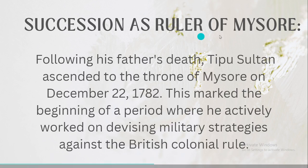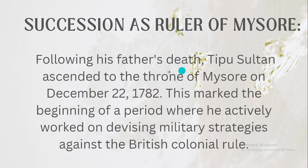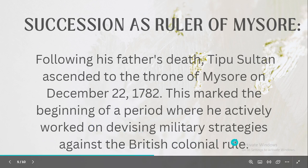Succession as ruler of Mysore. Following his father's death, Tipu Sultan ascended to the throne of Mysore on December 22nd, 1782. This marked the beginning of a period where he actively worked on devising military strategies against the British colonial rule.